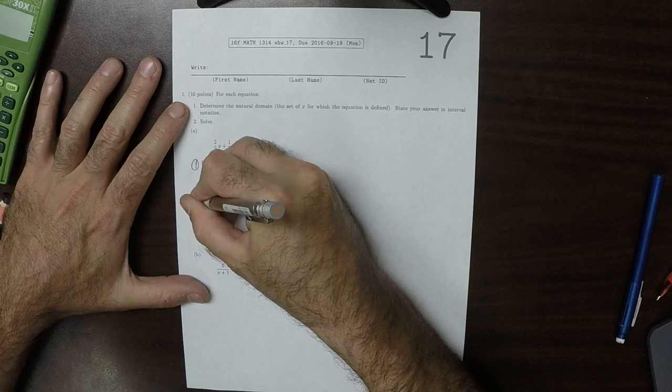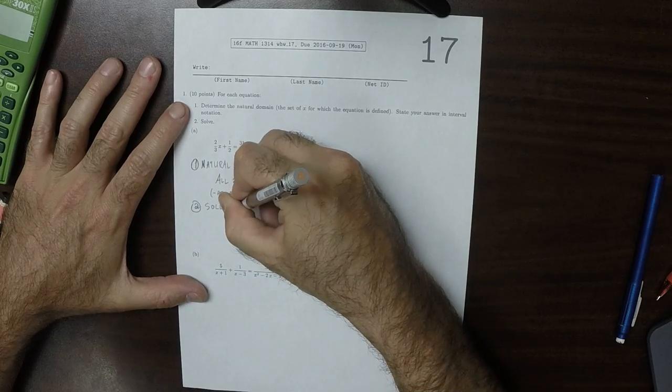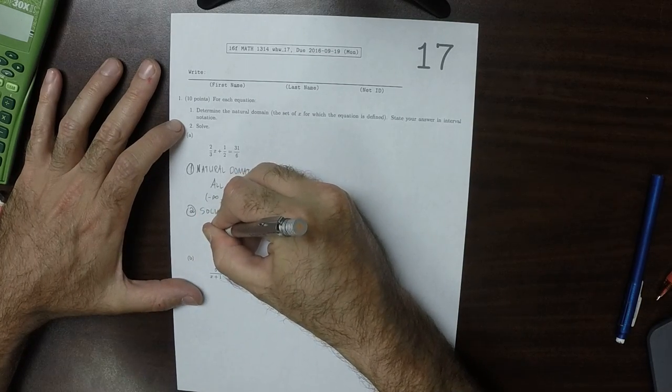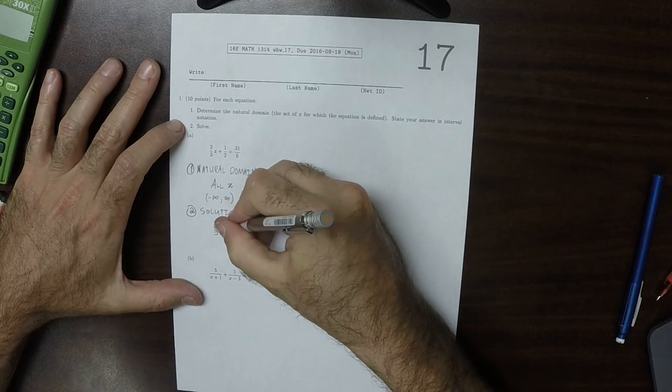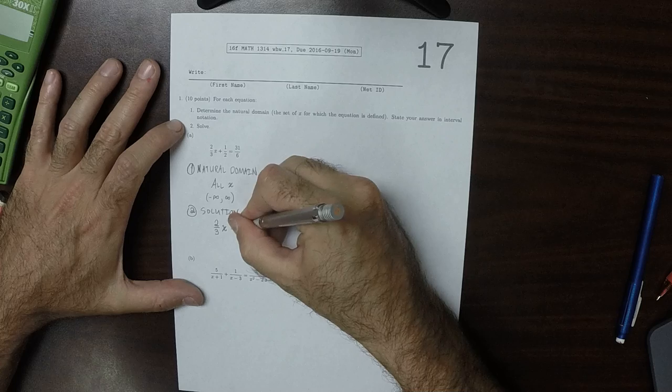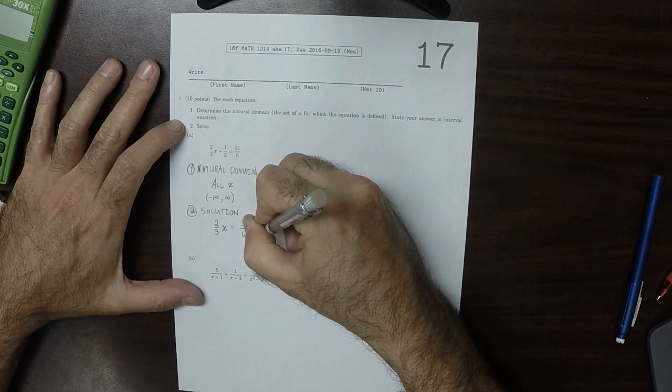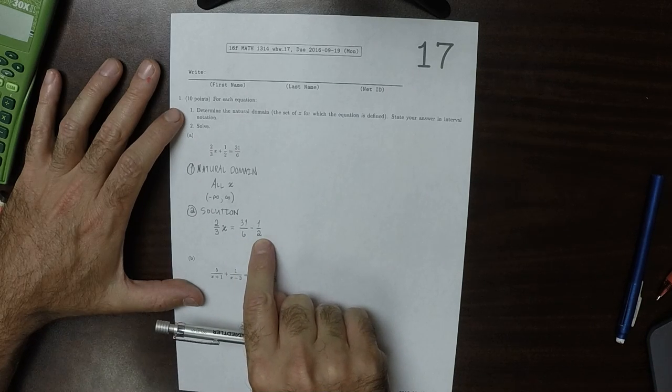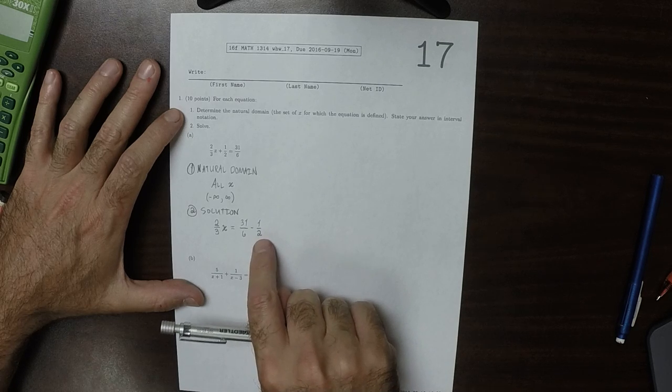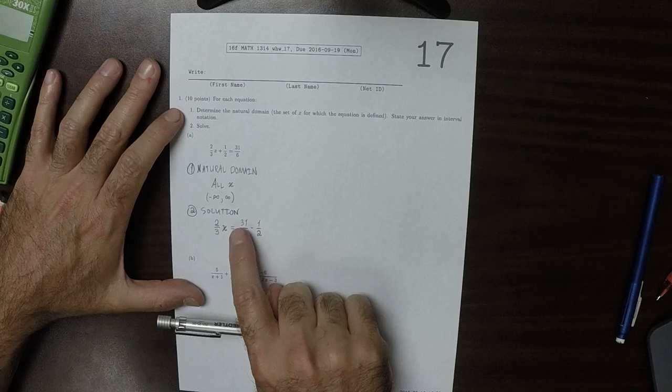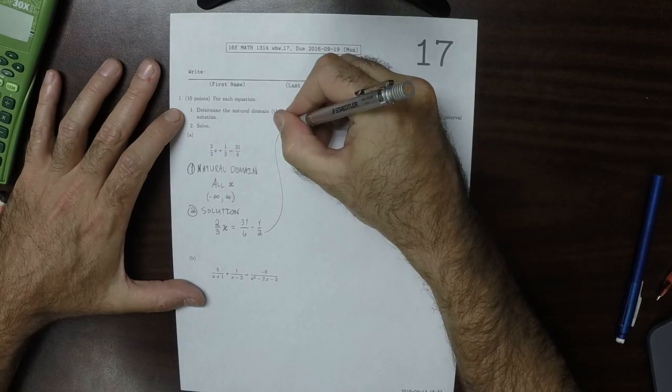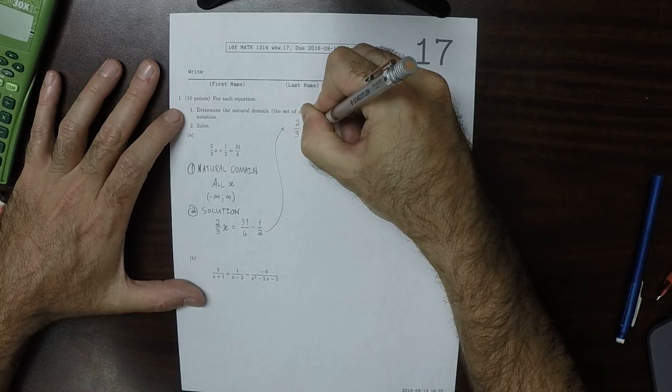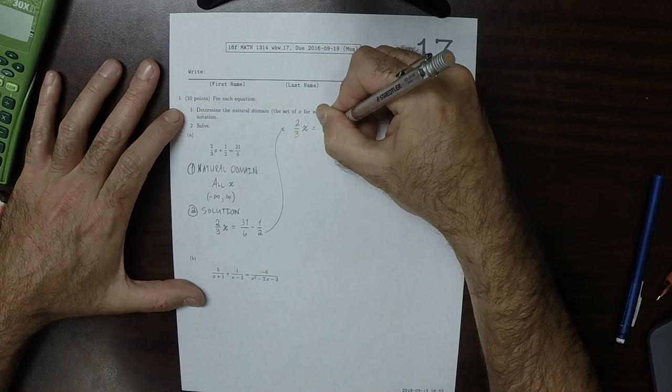So, for the solution, we'll take that 2 thirds, so that'd be 2 thirds x. And we'll move the half to the other side, so is equal to 31 over 6 minus half. The least common multiple of 6 and 2 is 6. So we'll reckon this as being 3 over 6. So 31 over 6 minus 3 over 6 is 28 over 6.